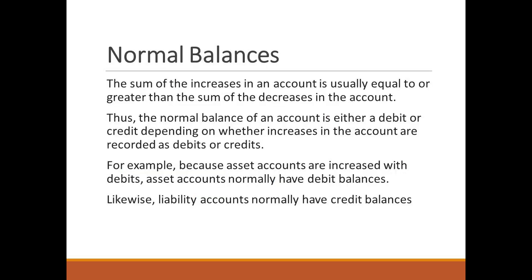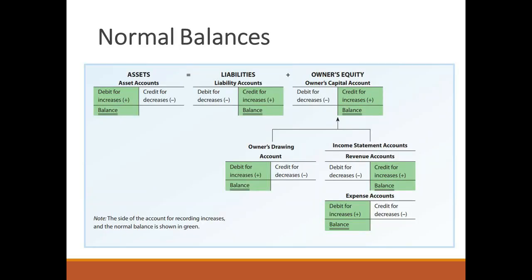The sum of the increases in an account is usually equal to or greater than the sum of the decreases in the account. Thus, the normal balance of an account is either a debit or credit depending on whether increases in the account are recorded as debits or credits. For example, because asset accounts are increased with debits, asset accounts normally have debit balances. Likewise, liability accounts normally have credit balances. The rules of debit and credit and the normal balance of the various types of accounts are summarized in this graph.